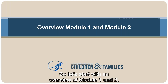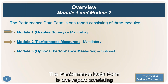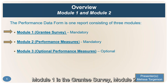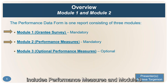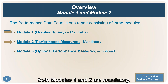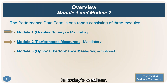The Performance Data Form is one report consisting of three modules. Module 1 is the Grantee Survey, Module 2 includes performance measures, and Module 3 includes optional performance measures. Both Modules 1 and 2 are mandatory, and those are the topics we'll be covering in today's webinar.